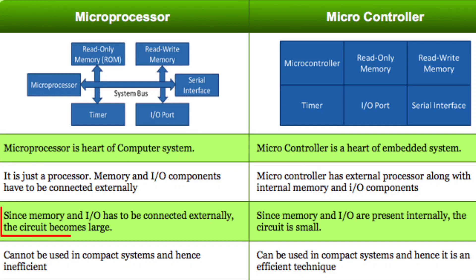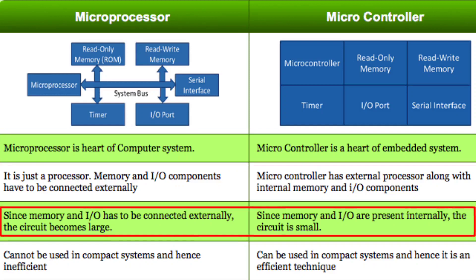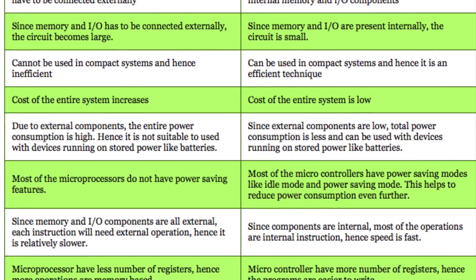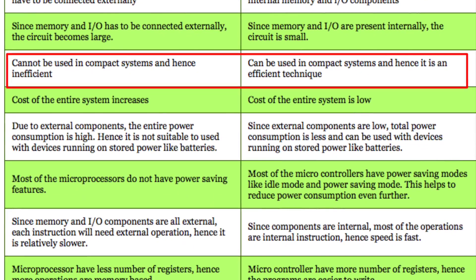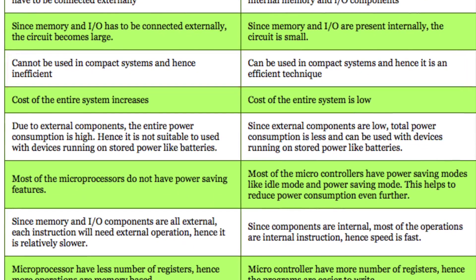The microprocessor-based system requires external memory, ports, and external ICs connected to the network, making the circuit board bigger and larger. If you have a microcontroller-based system, the memory, timer system, and ports are already available internally, so the circuit board size is small. For compact systems, we prefer microcontrollers over microprocessors.